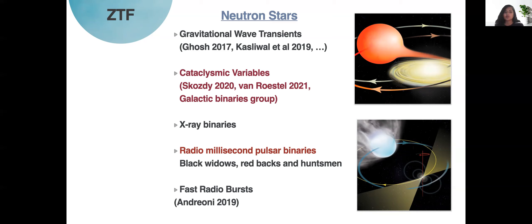Secondly, cataclysmic variables that comprise neutron star binaries could also be found. For example, AMCVN systems recently found by von Roestel et al. Thirdly, fast radio bursts are theorized to come from really intensely magnetic pulsars called magnetars and so fast radio bursts could also be tracked using ZTF and you can find it in a recent work by Andreoni et al.